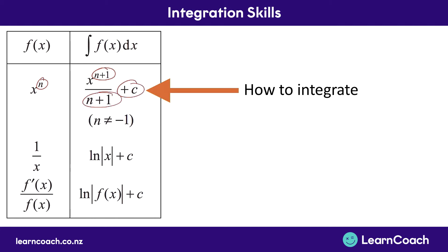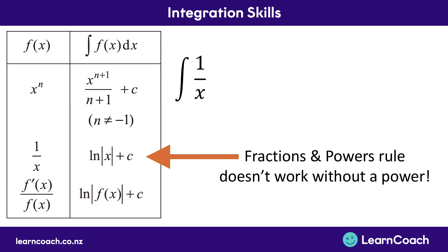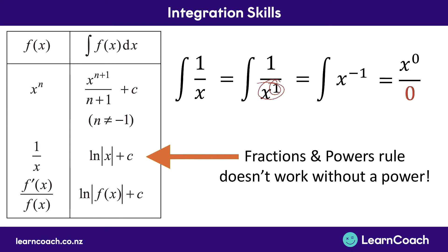We already know this first rule, but it says it doesn't work when the power is negative 1 — which is where we get on to the second rule. The rule of fractions and powers doesn't work when we have x to the power of negative 1. If you have 1 over x, that's the same as x to the power of negative 1. When integrating, we add 1 to the power, which gives x to the power of 0, then divide by the new power — but in maths, we cannot divide by 0. So we need a new rule.